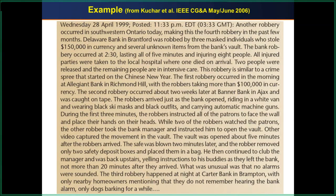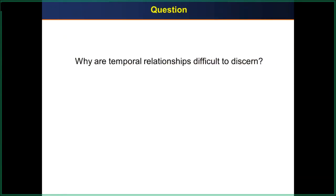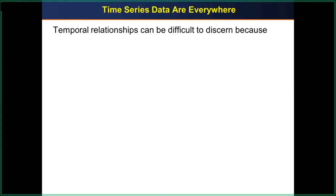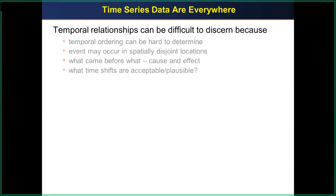That's basically a story that happens over time at different places. The question is, it's really hard to read and remember what's happening in this story, and then associate different events that happened at different times. They seem to be connected, but it's hard to figure out which item goes with what, and which ones occurred at different times. This is a very typical thing about time-varying data — temporal relationships can be difficult to assess because temporal ordering can be hard to determine.